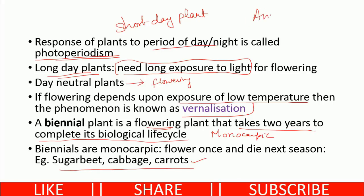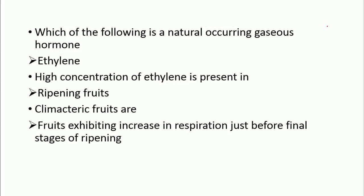Annuals complete their life cycle in one year and die after that. Perennials are long-living and keep flowering. A naturally occurring gaseous hormone is ethylene — high concentration of ethylene is present in ripening fruits. Climacteric fruits are fruits that exhibit an increase in respiration just before the final stages of ripening.